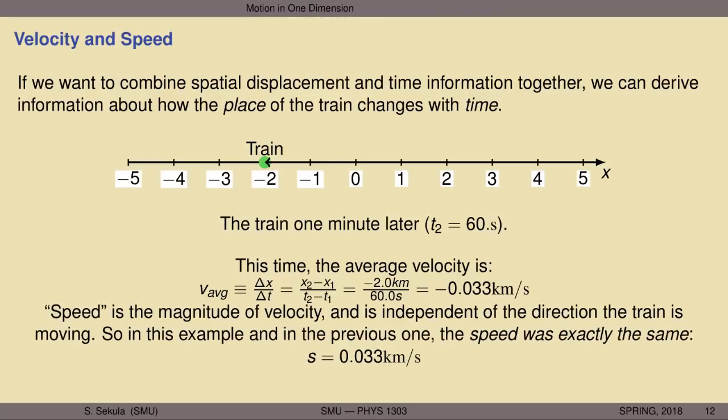Speed is a related concept to velocity. Speed is the magnitude of the velocity — it is a quantity that is always positive, regardless of whether the velocity is positive or negative. To get the average speed, all you have to do is ignore the positive or negative sign in front of the velocity and quote the number after the sign. In both examples, the speeds were exactly the same: 0.033 kilometers per second. Whereas in the first example the velocity was positive 0.033 km/s, and in the second example the velocity was negative 0.033 km/s on average.